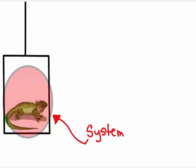First, let's define our system. This is the iguana and the elevator. We're not dealing with the tension in the elevator cables, just to be clear. Now, let's define our coordinate system. Positive will be up, and negative will be down.